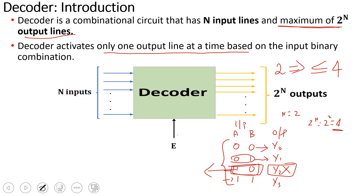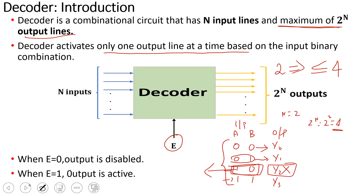If you use an enable signal E: when E is 0, the output is all zeros regardless of input. When E is 1, then your output is active and input is transferred to the output side. So that is the introduction to the decoder.